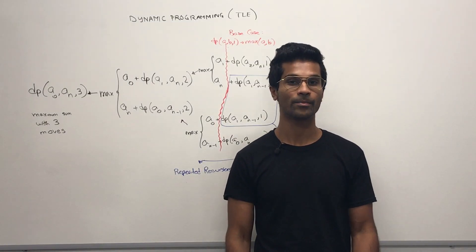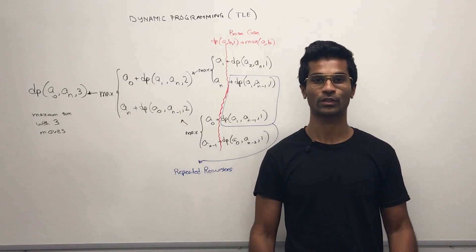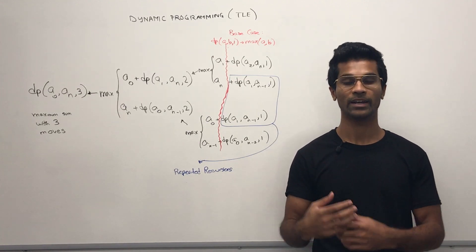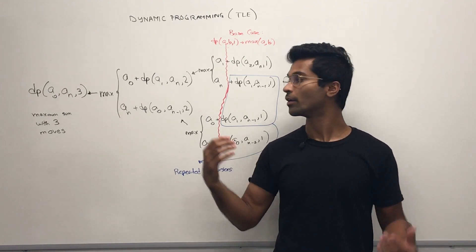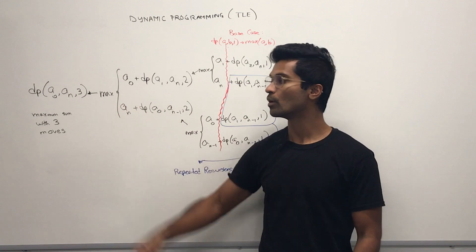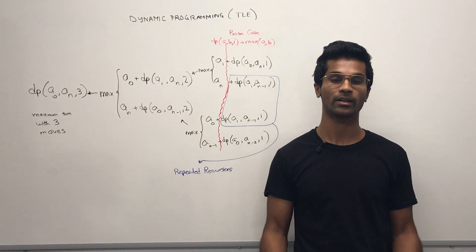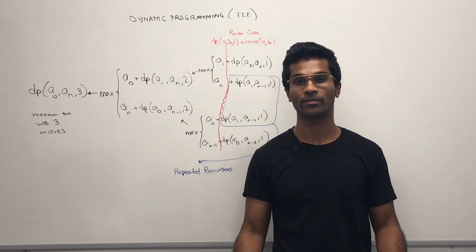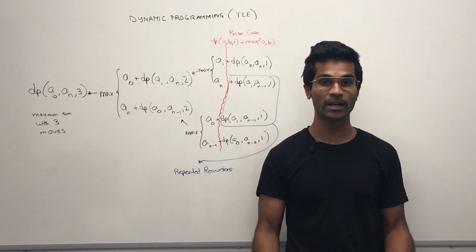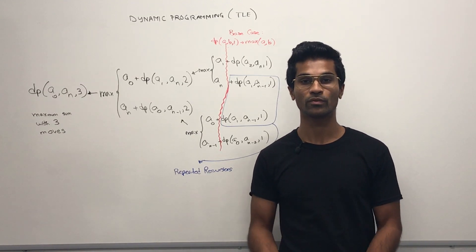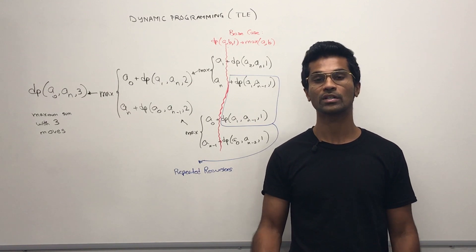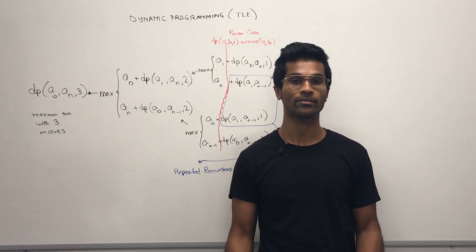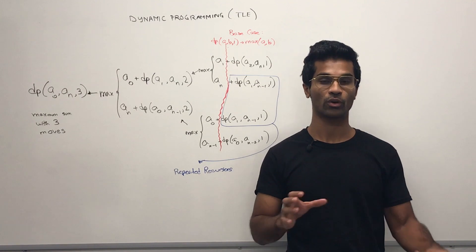When dealing with dynamic programming, we know we're looking for subproblems. So the question we're asked is: given an array and let's say three moves, what's the maximum sum we can make? Well, after I make one move, I pretty much have the same problem again — I just have one less move and I have a shorter array. The question then becomes: what's the maximum sum I can have with two moves and a shorter array?